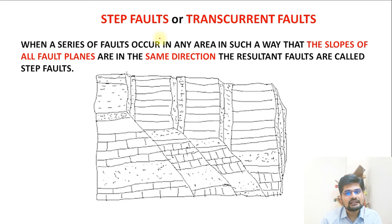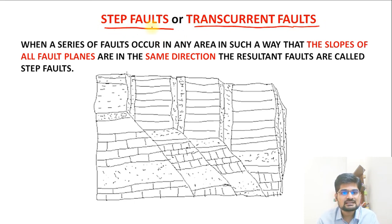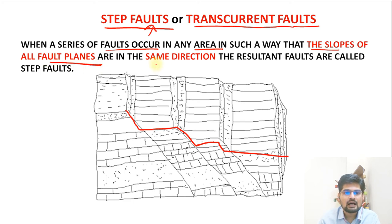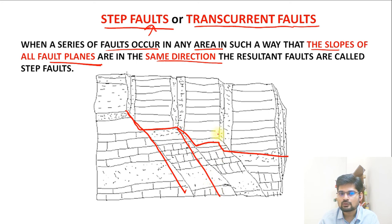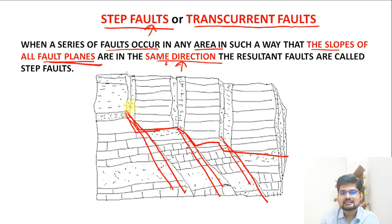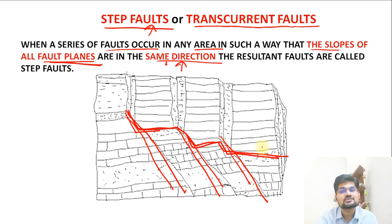Another type is the step fault, also called a trans-current fault. When a series of faults occur in an area such that the slopes of all the fault planes are in the same direction, the resultant landform looks like a staircase. Remember — all fault planes point in the same direction, creating this step-like or stair-like structure.